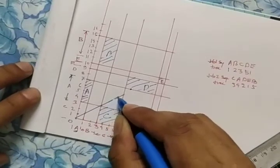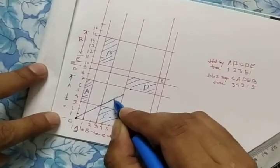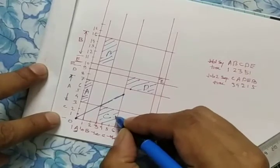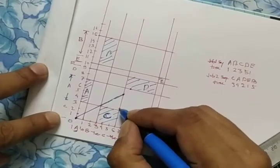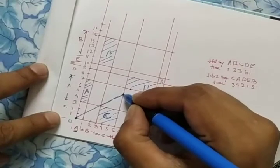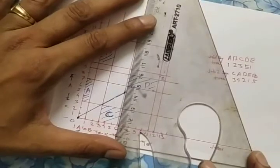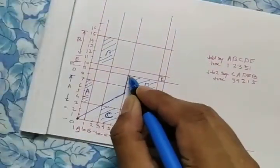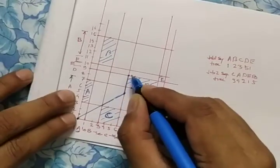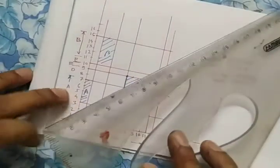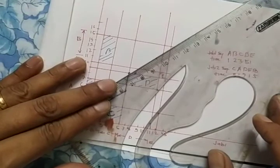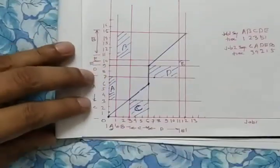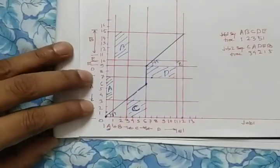The 45-degree line passes through the origin and moves diagonally. However, when it encounters a blocked machine region — such as Machine C — you cannot extend through it. At that boundary, move vertically upward to navigate around the block, then continue the 45-degree line again from the new point. Repeat this for each blocked region encountered along the path, such as for Machine D.